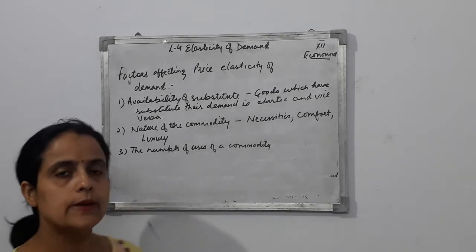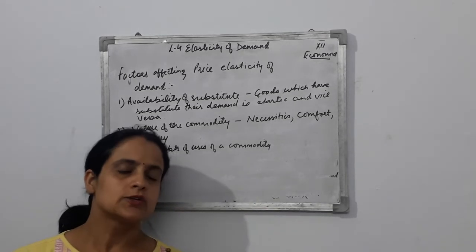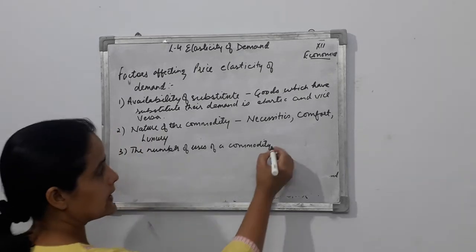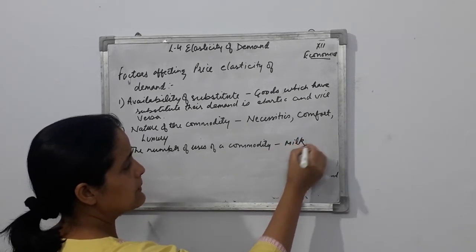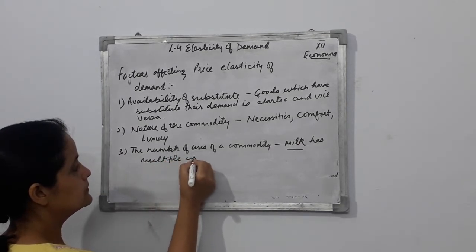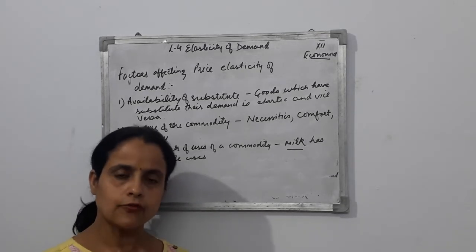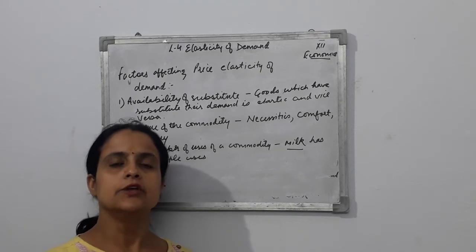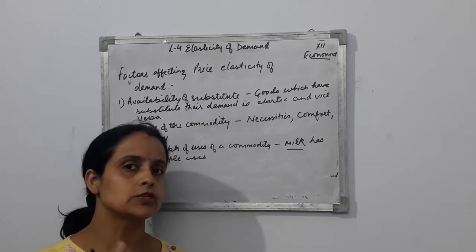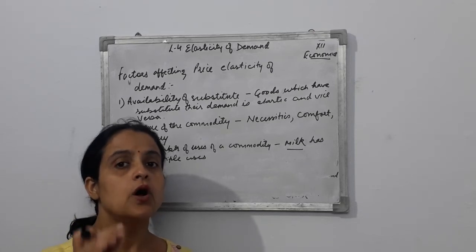The number of uses of a commodity is also a very important factor affecting price elasticity of demand. Some goods have many uses — for example, milk and electricity. Milk has multiple uses: you can make a variety of products from it. Similarly, electricity has multiple uses. If the price of milk or electricity falls, demand for these goods rises significantly because you can expand their use across many purposes.